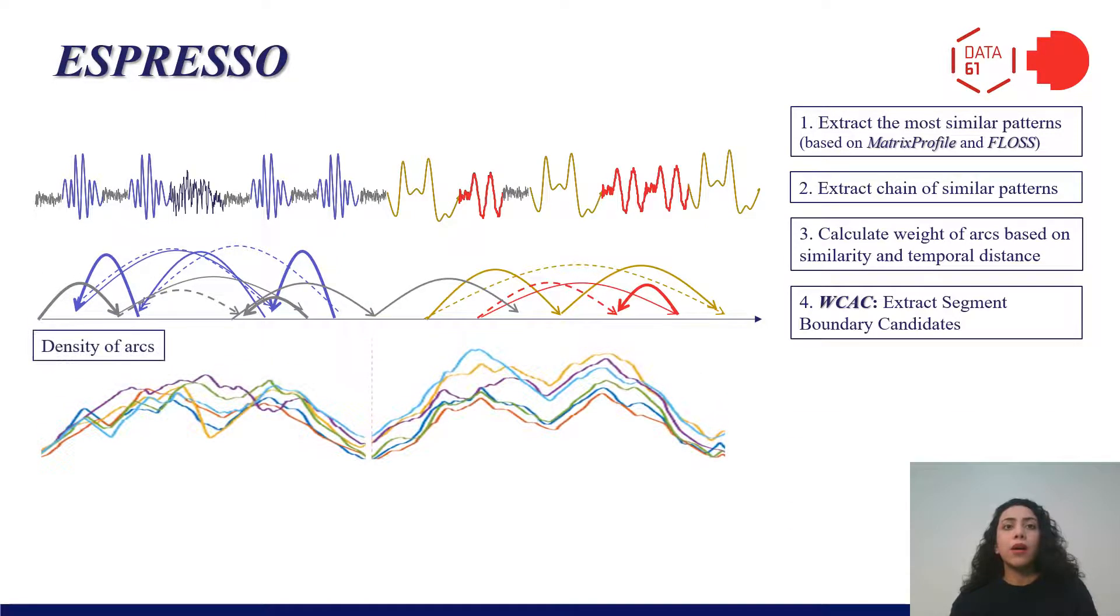The main idea here is that repeated patterns relate to the same class of segments and hence occur within close temporal proximity. Therefore, we wouldn't expect to see many arcs crossing the segment boundaries.